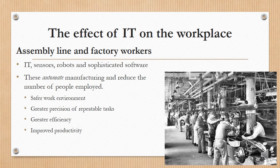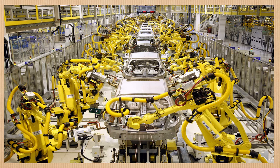A lot of manufacturing has been automated, which means fewer people are employed. But on the other hand, the work environment is safer because machines can work in places where it's dangerous for humans. There's greater precision because machines don't get tired, and greater efficiency because machines don't go on strike. The productivity goes up. This is a picture of an assembly line totally worked by robots.